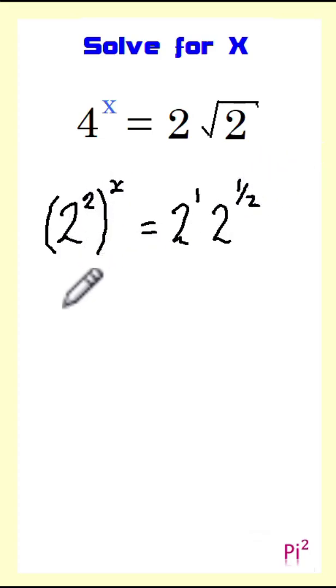Now let's rewrite this as 2 to the power of 2x. Yes, we're allowed to multiply these together.